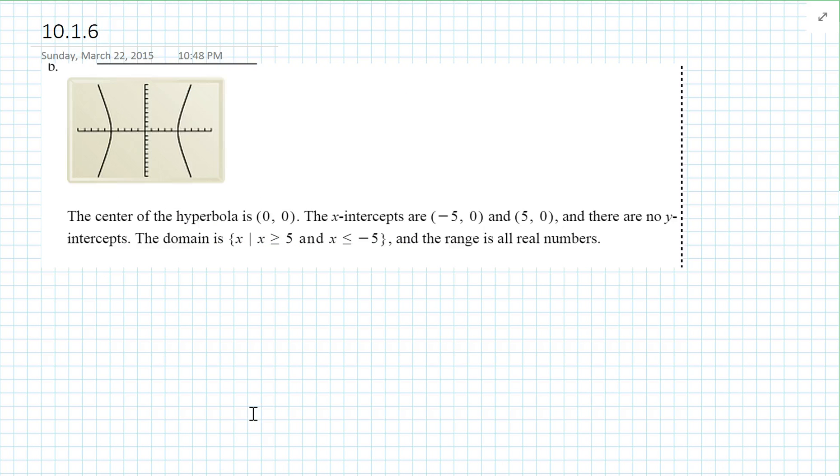Next example. Let's look at this. The center of this is 0, 0. It's a hyperbola. The intercepts are 1, 2, 3, 4, 5. So the x-intercepts are negative 5, 0 and 5, 0. There are no y-intercepts. The domain is x is less than or equal to negative 5 and x is greater than or equal to 5. And the range is all real.